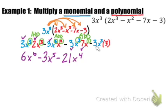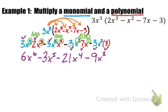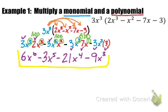Finally, we have negative 3x cubed times 3. We have a 3 and a 3, so the product is 9. There is no additional variable to multiply with x cubed, so we just leave it as negative 9x cubed. Once you distribute the monomial to every term in the polynomial, double-check that your polynomial is in descending order and check for like terms. There are no like terms here, so this is the final answer.